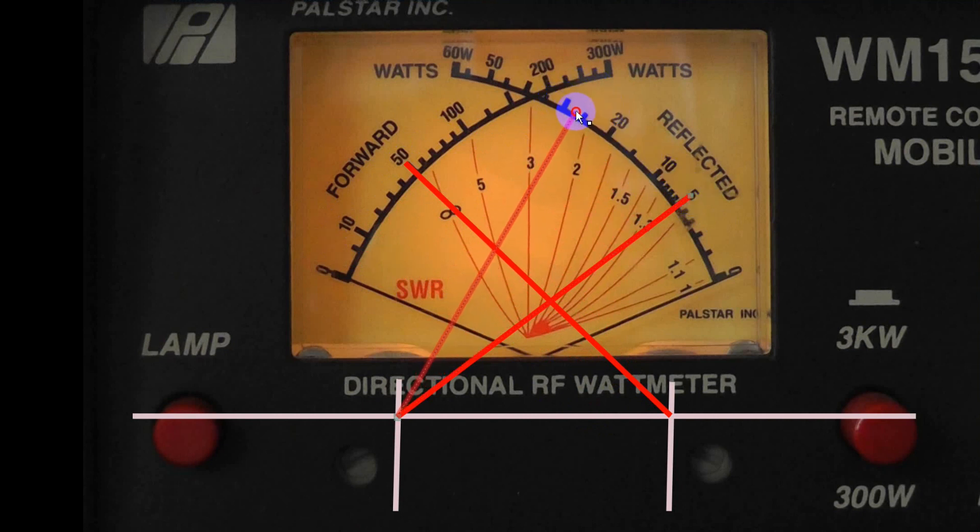Here's an example of a 5 to 1 SWR: 50 watts forward, 27 watts back. 5 to 1, that's terrible SWR. You're losing a lot of power. But this shows you how to read the thing.